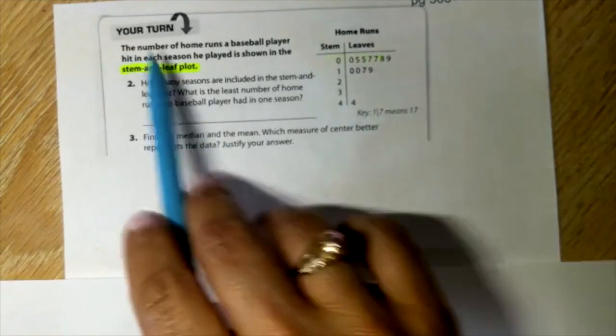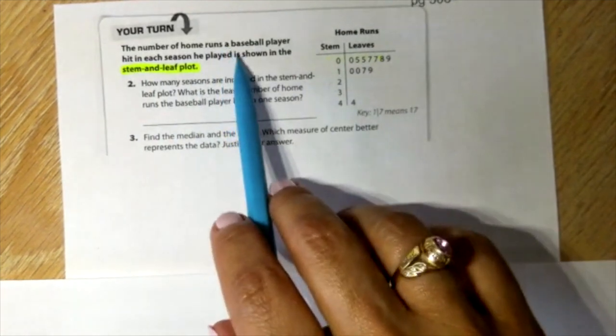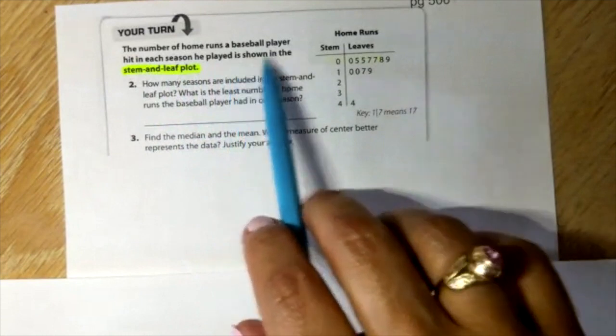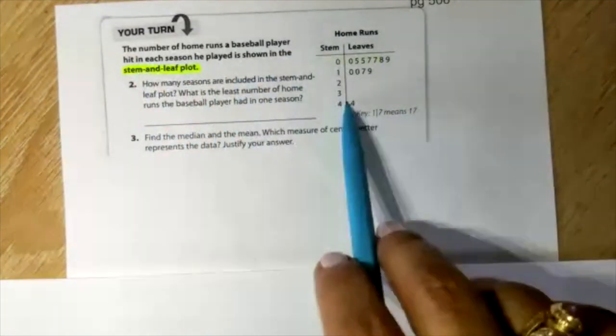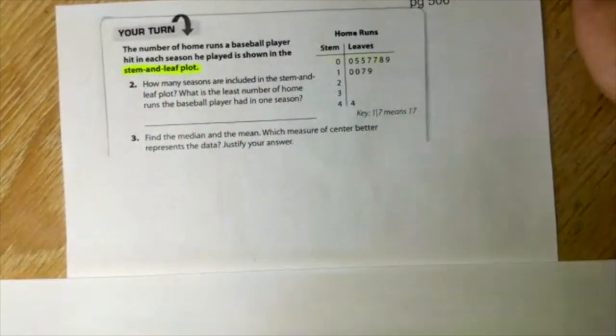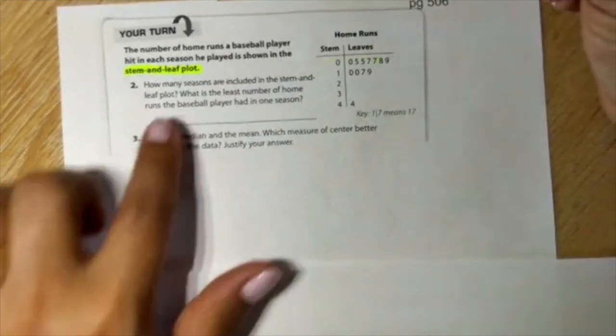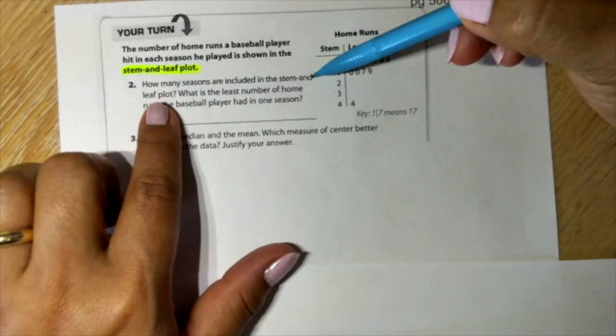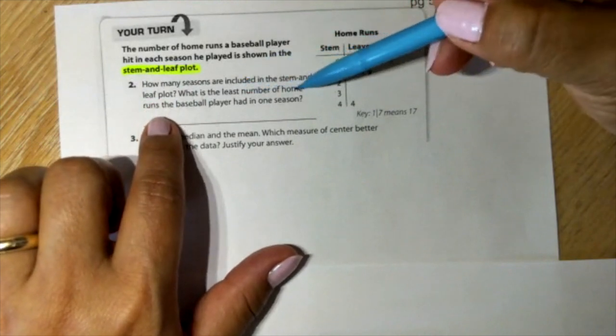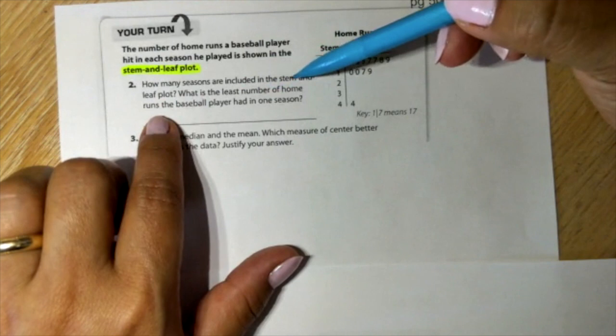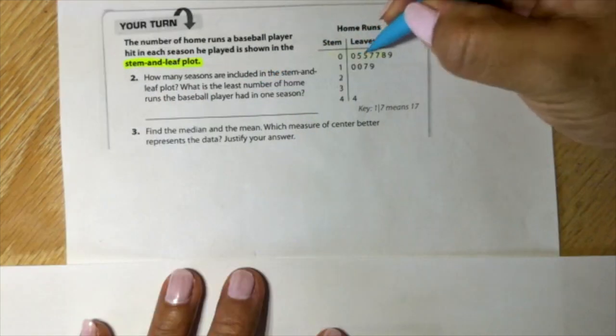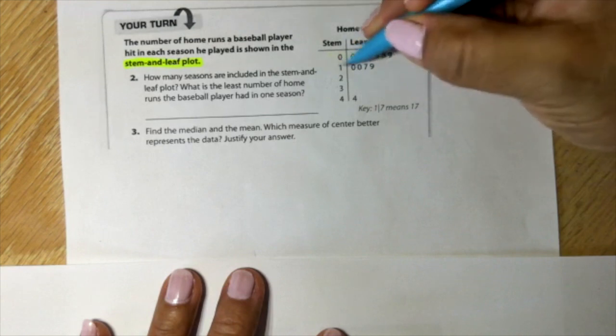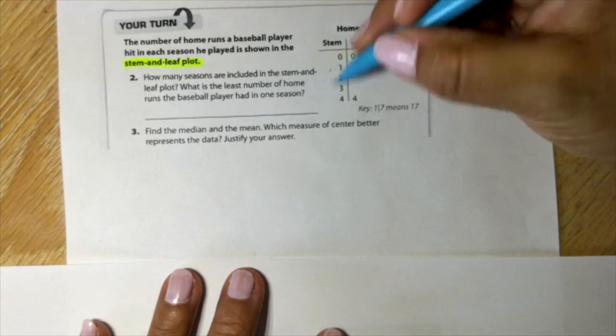Number of home runs a baseball player hit in each season he played is shown in the stem and leaf plot. How many seasons are included in the stem and leaf plot? 5, 5, 7, 7, 8, 9, 10, 10, 17, 19, and 44. Twelve.